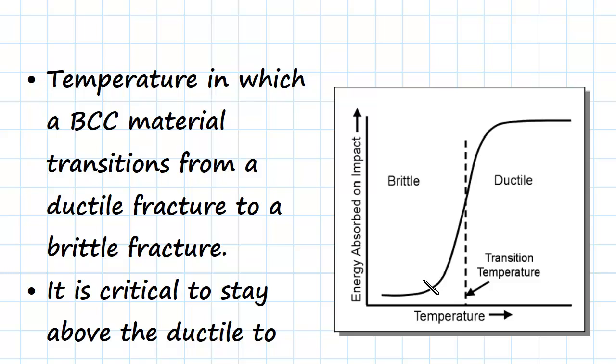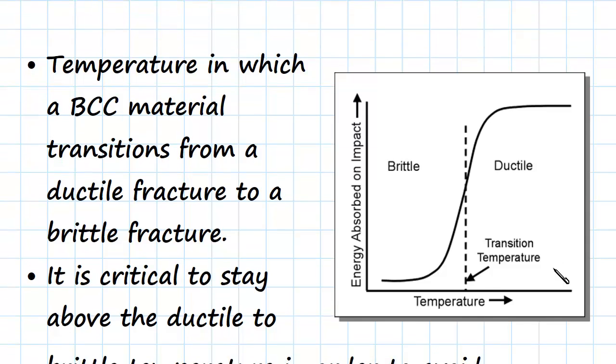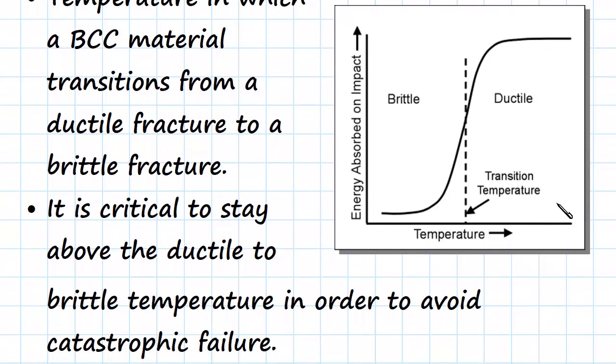So whereas initially it was going to experience a ductile fracture, which we much prefer as we can see physical warning, it's very quickly moved into a brittle fracture, which is catastrophic as you know. So it's critical to stay above the ductile to brittle temperature in order to avoid catastrophic failure.